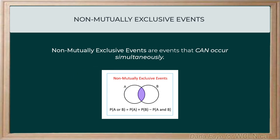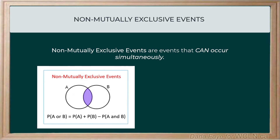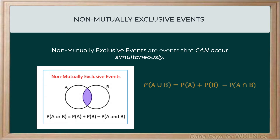When we calculate the probability of non-mutually exclusive events, we must implement what's called the principle of inclusion and exclusion. Essentially, that means we have to be sure not to count the favorable outcomes they have in common twice. This is what the equation looks like: we're still calculating the probability of event A or event B, and we still add the probability of event A and the probability of event B.